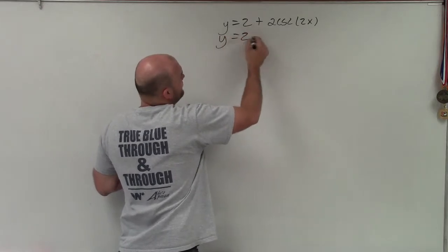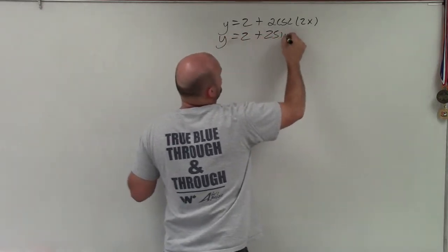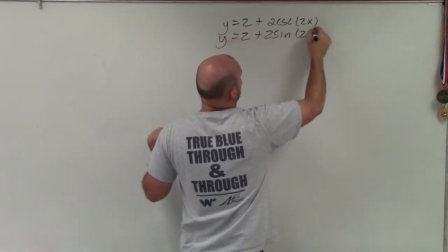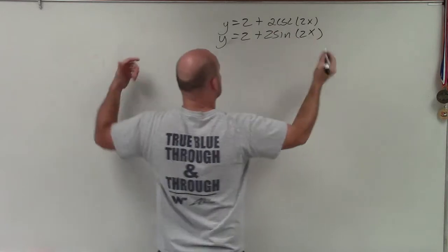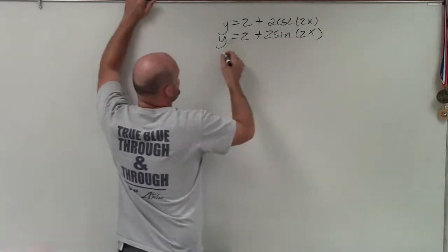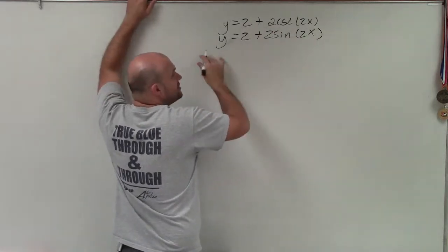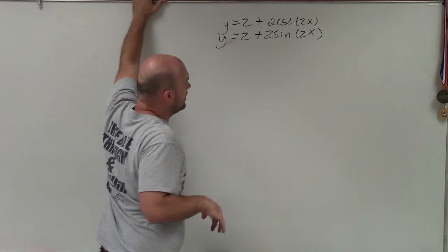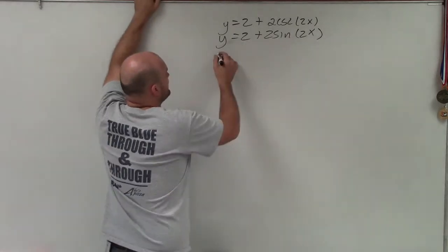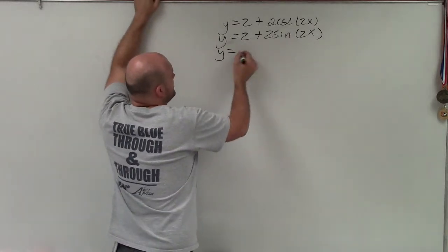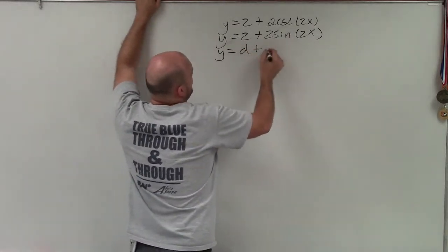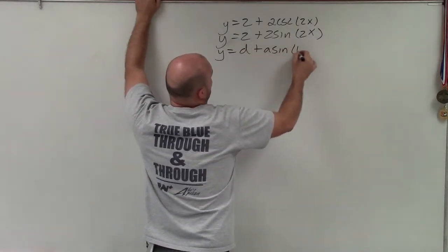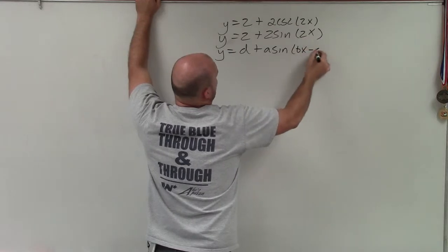When graphing sine, I want to determine some very important parts. To determine those important parts, I need to make sure I understand the transformation form of my equation. That could be d plus a sine of bx minus c.